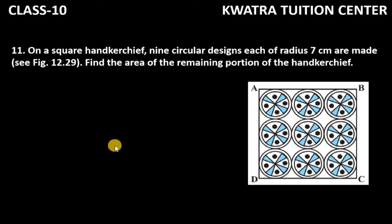Hello everyone, let's start with question number 11. It says on a square handkerchief, 9 circular designs each of radius 7 cm are made. Find the area of the remaining portion of the handkerchief.